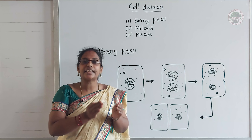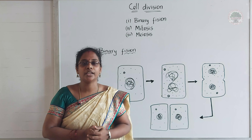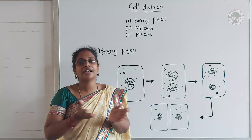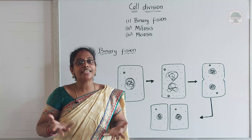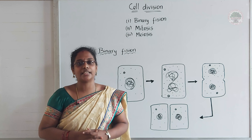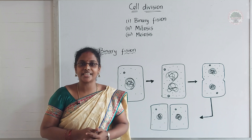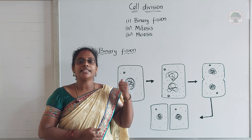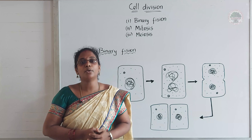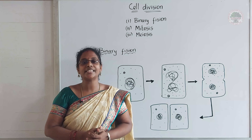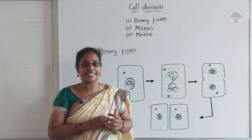The single-celled fertilized egg, or we can call it a zygote, has become a very big adult with trillions and trillions of cells in it. That is very interesting! This process is called cell division, and that is what we are going to discuss in this video.